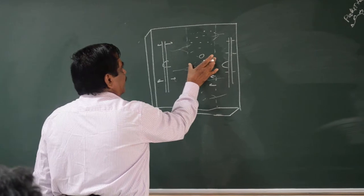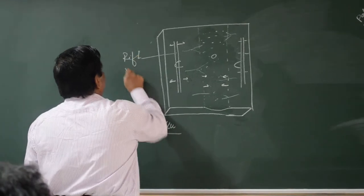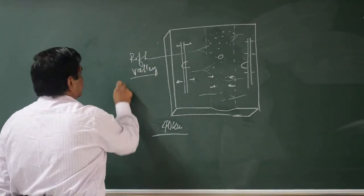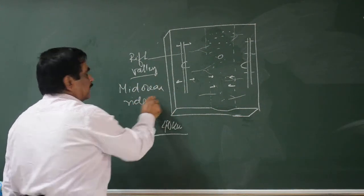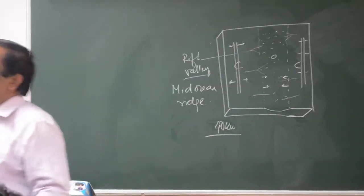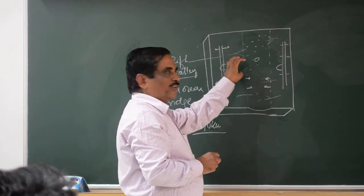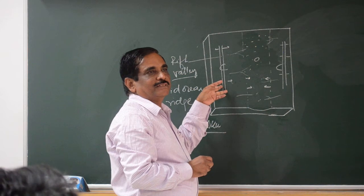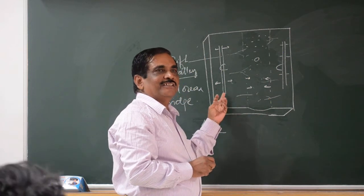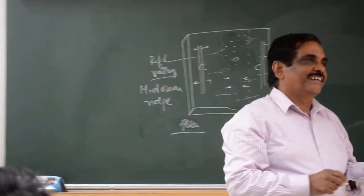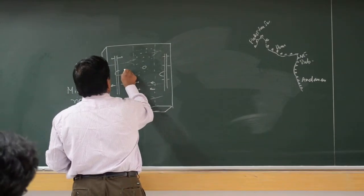Gradually these two points will come together and this becomes a mid-oceanic ridge. These are other mid-oceanic ridges and other tectonic elements. So this will now close, bringing all these sediments into the continent, and here a new ocean will be opened. So when the new ocean opens up, a new avenue for sediment deposition — again closing. So this process will continue and in every process the continent will keep growing.